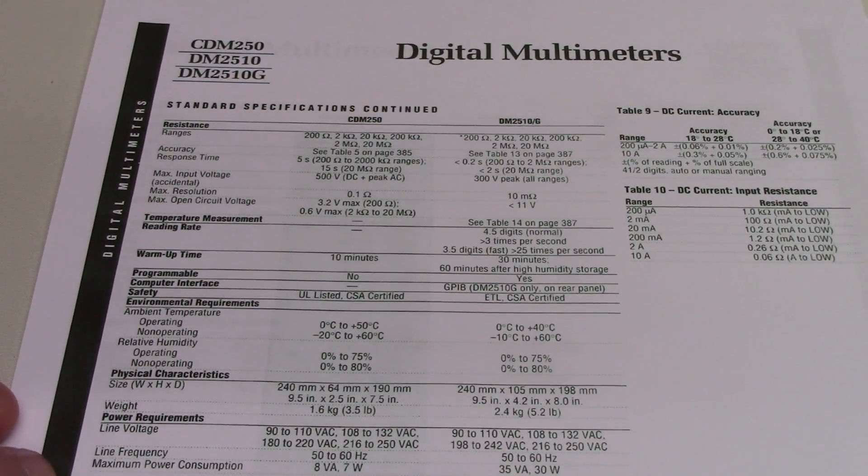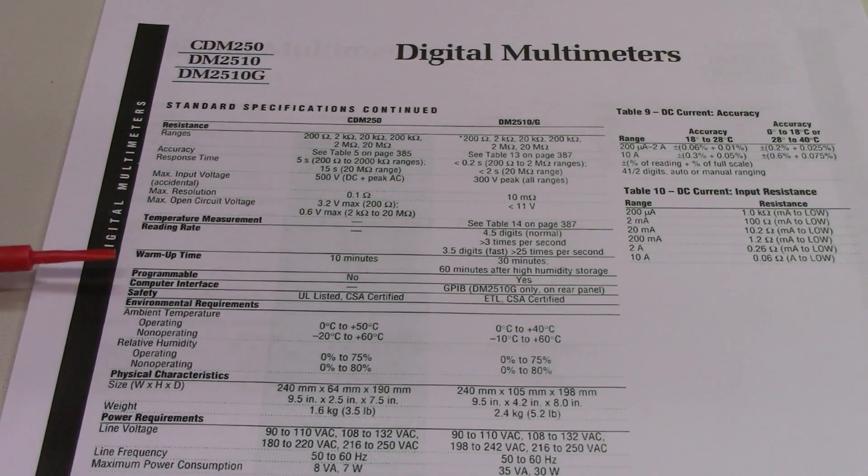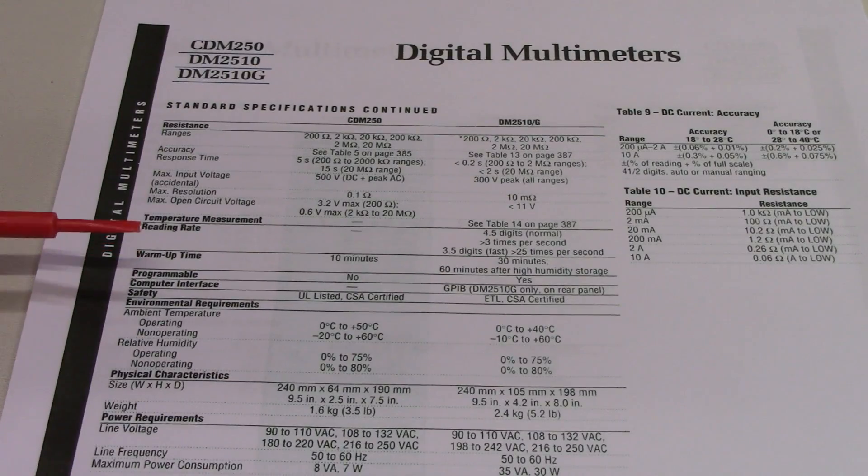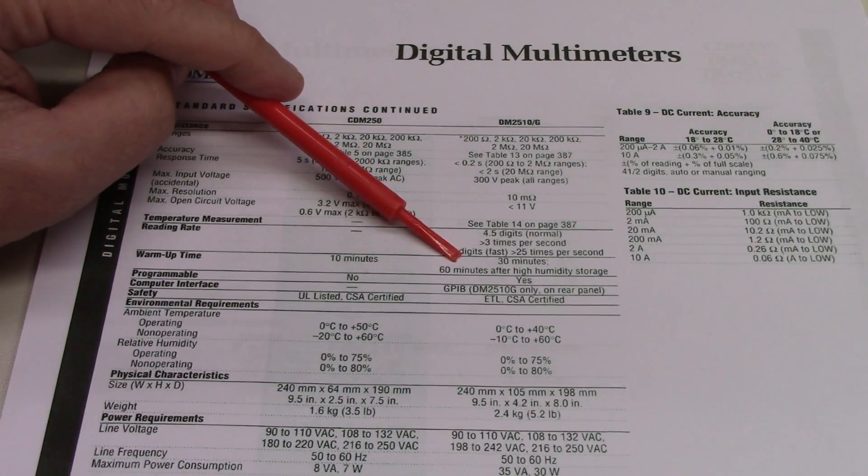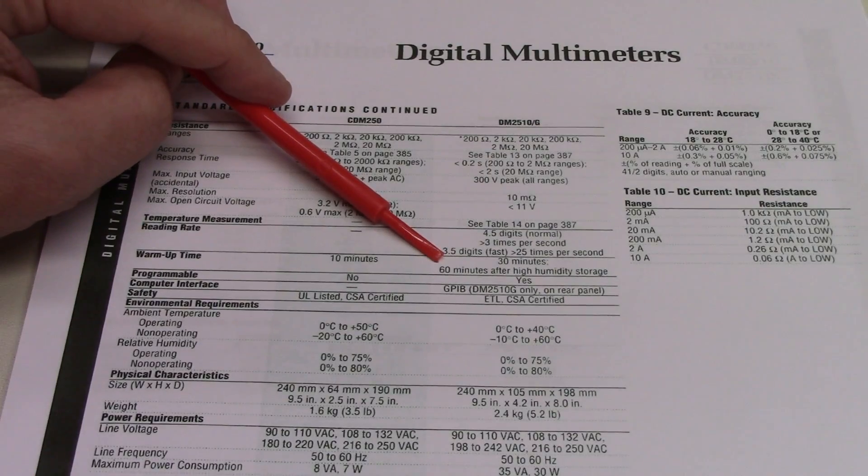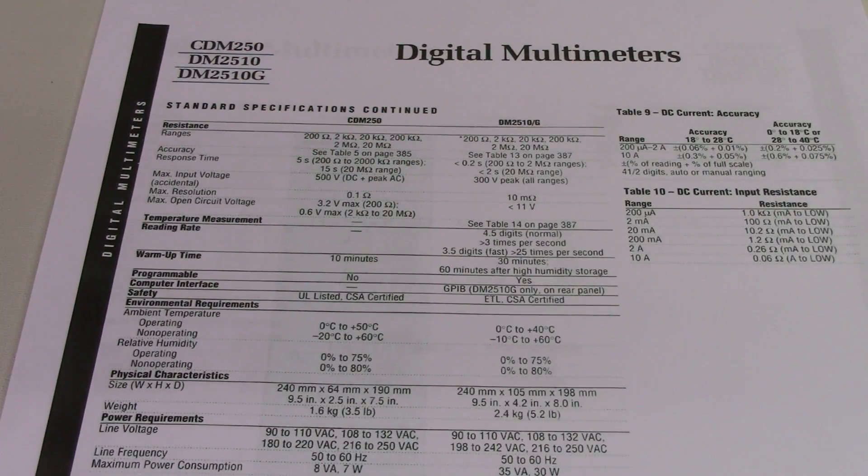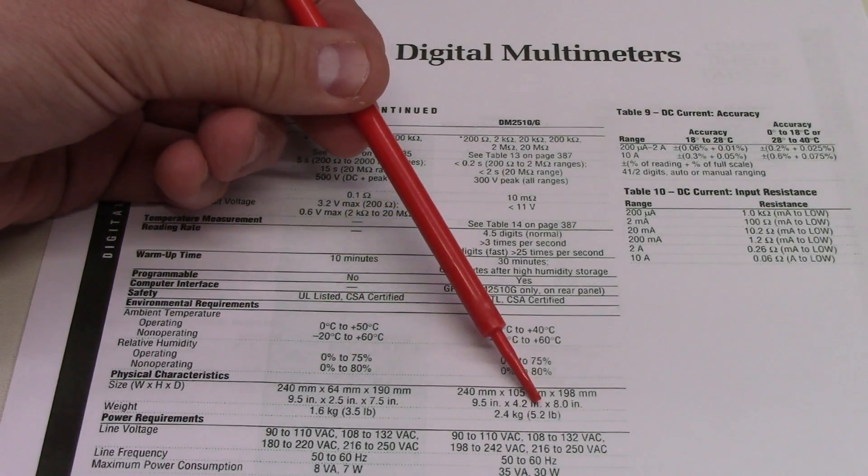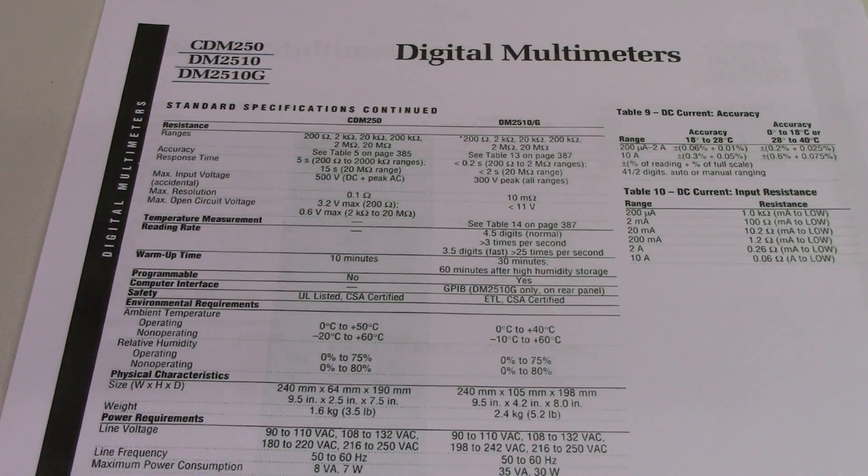A couple other things that are noteworthy. These specs quote a warm-up time, and for the 2510 series of meters it quotes 30 minutes warm-up time or 60 minutes after high humidity storage. I have no idea about the history of this particular unit or how it was stored or for how long it was stored or whether or not it was abused before it went into storage and I bought it. But I've had it on for probably going on 8 hours today and it appears to be pretty stable.